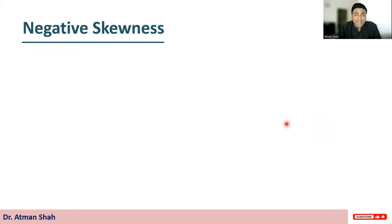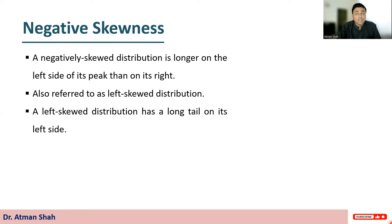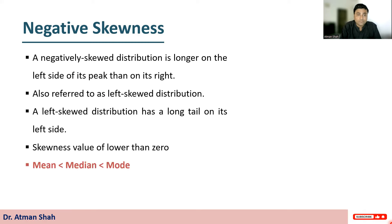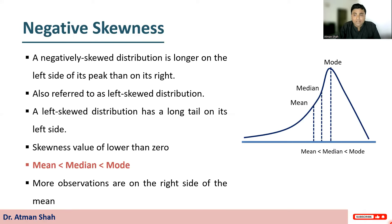Let's understand negative skewness. A negatively skewed distribution is longer on the left side of its peak than on its right. It is also referred to as a left skewed distribution, which has a long tail on its left side. The value of skewness is less than zero. In this case, mean is less than median, and median is less than mode. More observations are on the right side of the mean. In the diagram, most of the observations lie to the right of the mean.